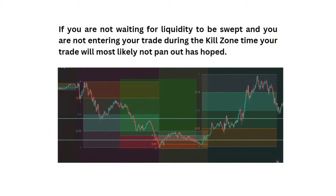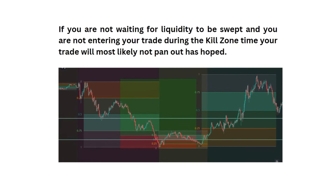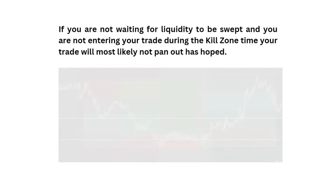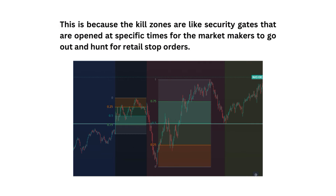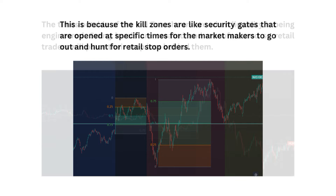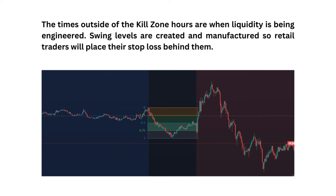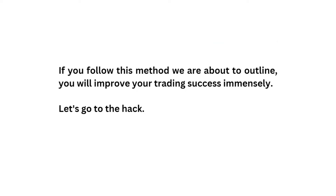If you are not waiting for liquidity to be swept and you are not entering your trade during the kill zone time, your trade will most likely not pan out as hoped. The kill zones are like security gates that are opened at specific times for the market makers to go out and hunt for retail stop orders. The times outside of the kill zone hours are when liquidity is being engineered — swing levels are created and manufactured so retail traders will place their stop loss behind them. If you follow this method, you will improve your trading success immensely.